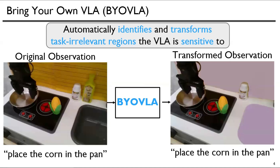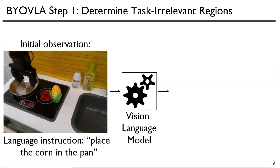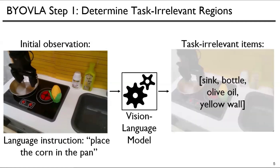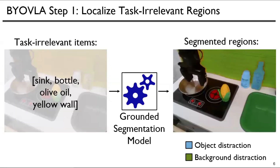We now present an overview of our method. Given an initial observation and language instruction, we first query a vision-language model to identify what is task-irrelevant in the image. The output list of strings from the VLM is then fed to a segmentation model to localize the pixels of each region.